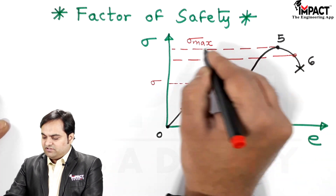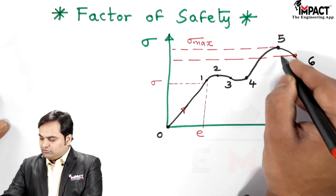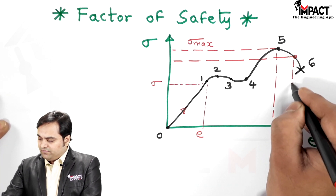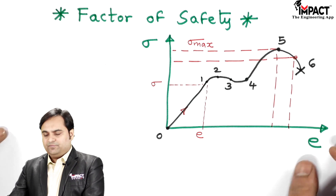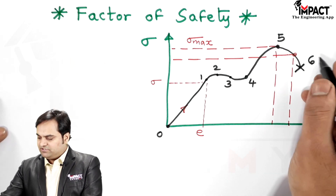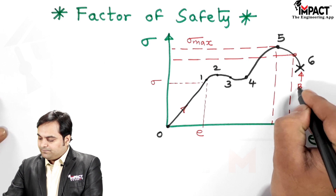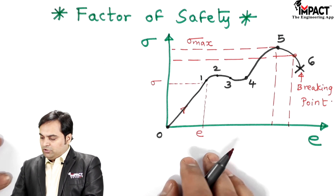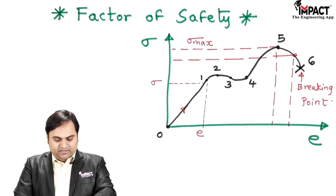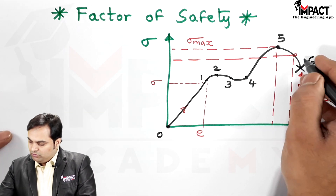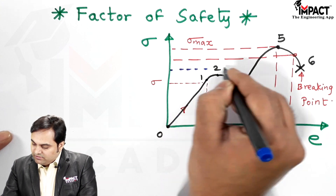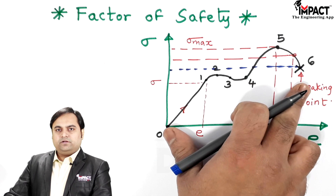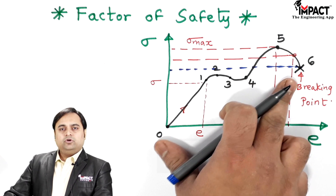Just after the ultimate stress, even if we reduce the stress, the strain continues to increase. As we can see, strain increases even though stress has decreased, and finally at point number 6 the material breaks — called the breaking point. At the breaking point, even though the stress is much lower than the maximum stress, the material has broken.